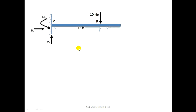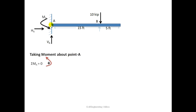Here VA is acting upward, HA is the horizontal reaction, and MA is the moment reaction. Taking moment about point A, the sum of all moments about point A is equal to zero. Counterclockwise moment is taken as positive and clockwise moment is taken as negative.